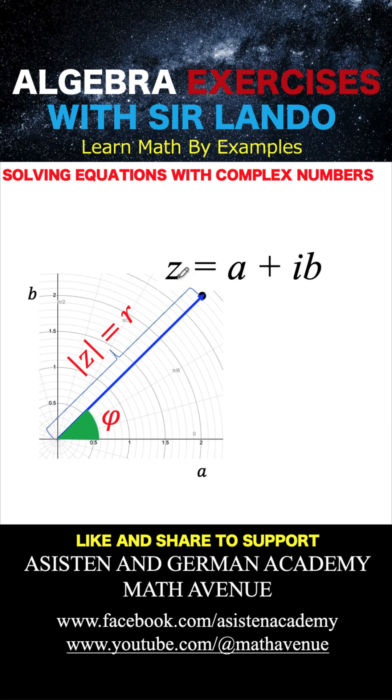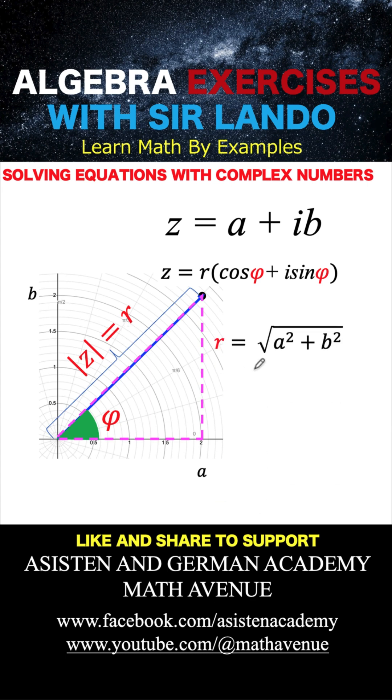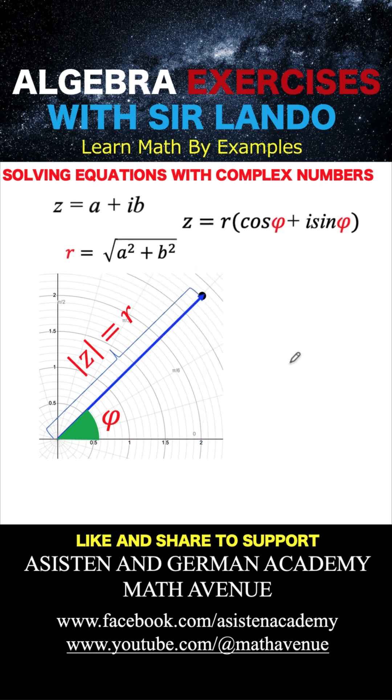Now, this point was z equals a plus bi in the complex plane, but in the polar plane, we now describe this point as z equals r times the quantity cosine of this angle plus i sine of this angle. Notice that if I create a right triangle here, then the value of this r can be computed using the Pythagorean formula r equals the square root of a squared plus b squared. Now we need to remember all these formulas because we are going to use them later on.